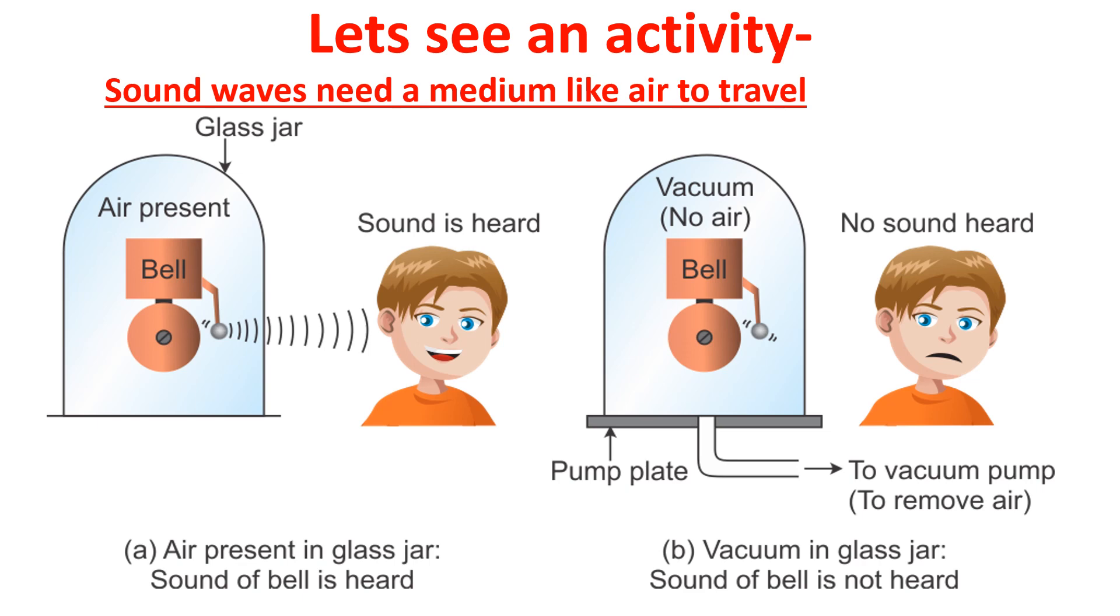Let's see an activity. Sound waves need a medium like air to travel. For this, you need two glass jars. In one glass jar, air is present and if the bell is ringing in it, the boy is able to hear the sound of bell. This proves that the sound waves need a medium like air to travel.